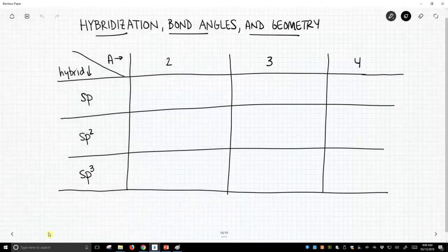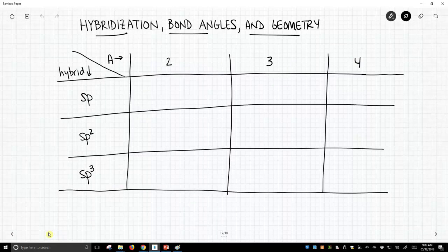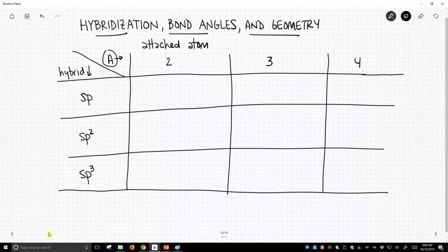So on the screen we have this very sloppy table and across the top we have columns that are represented by A. Remember A is the number of attached atoms and the rows going down are our types of hybridization. So we're going to populate this table.